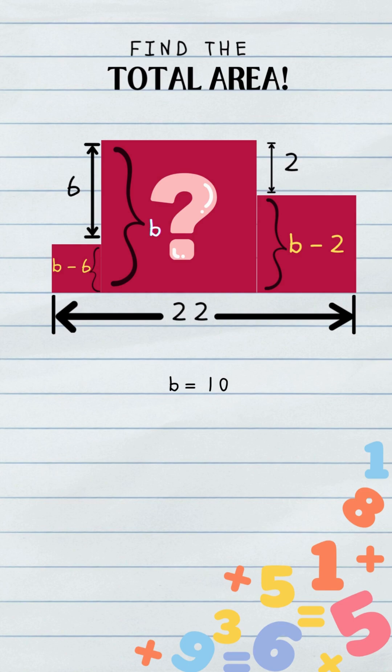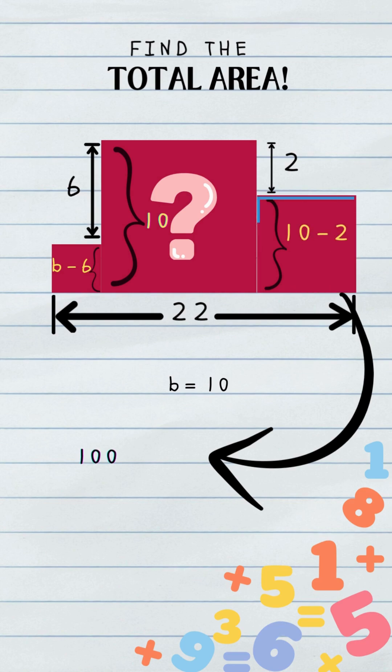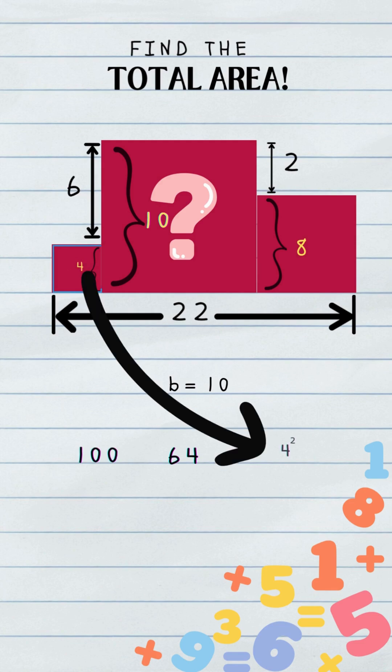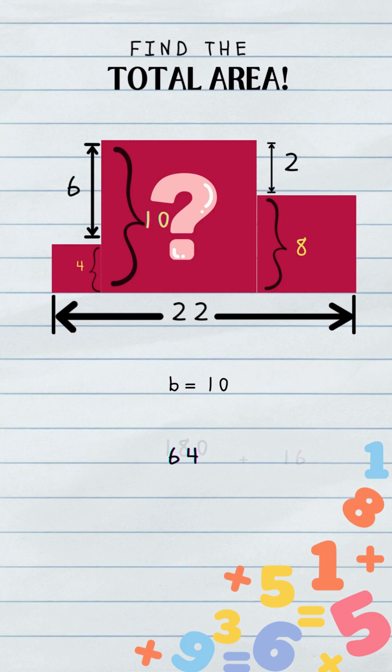Done. And if B is 10, the rest is just a victory lap. The middle square's side is 10. So its area is 10 squared, 100. The first square was B minus 2. 10 minus 2 is 8. Area 8 squared, 64. The tiny square was B minus 6. 10 minus 6 is 4. Area 4 squared, 16. Add them up. 64 plus 16 is 80. Plus the 100 gives us 180.